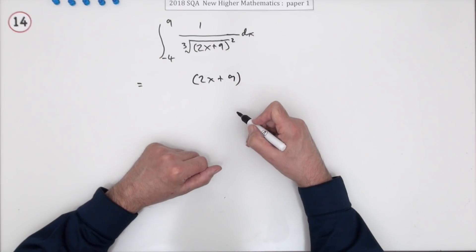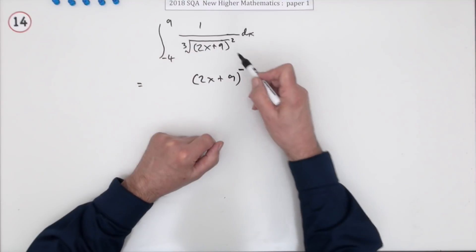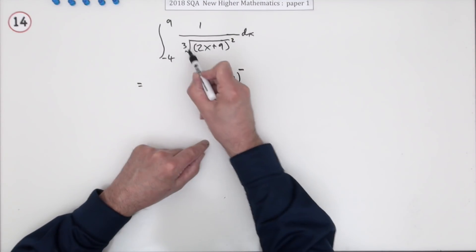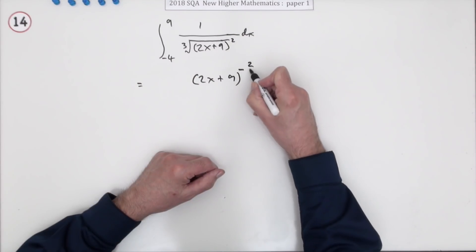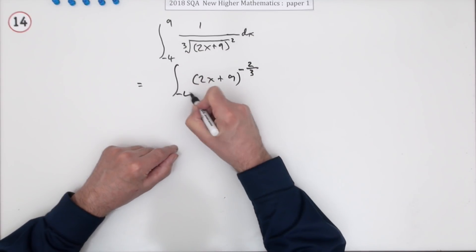Now don't get these confused: one's the power, one's the root. Two's the power and the number beside the root sign is the root. Two goes on top, the root goes underneath - where else would you find a root? So that's what you're going to integrate.